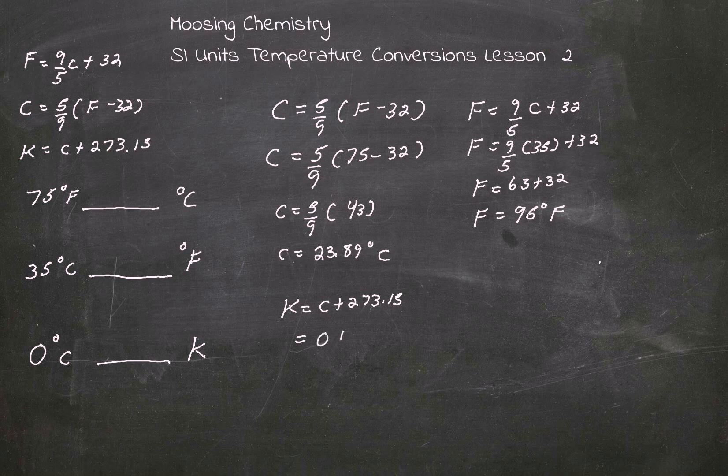We're going to put 0 in there plus 273.15, which gives me 273.15 K. That's it for this lesson. Have an awesome day, and we'll see you again on Mousin Chemistry.